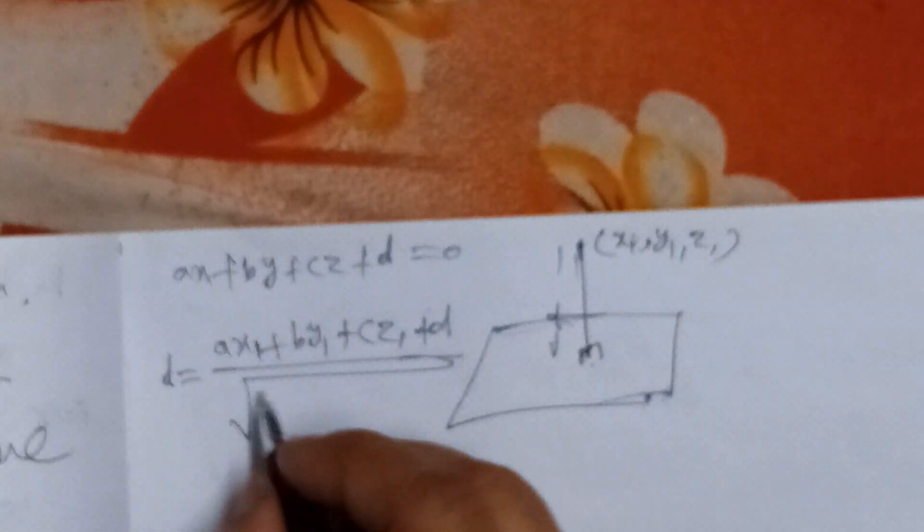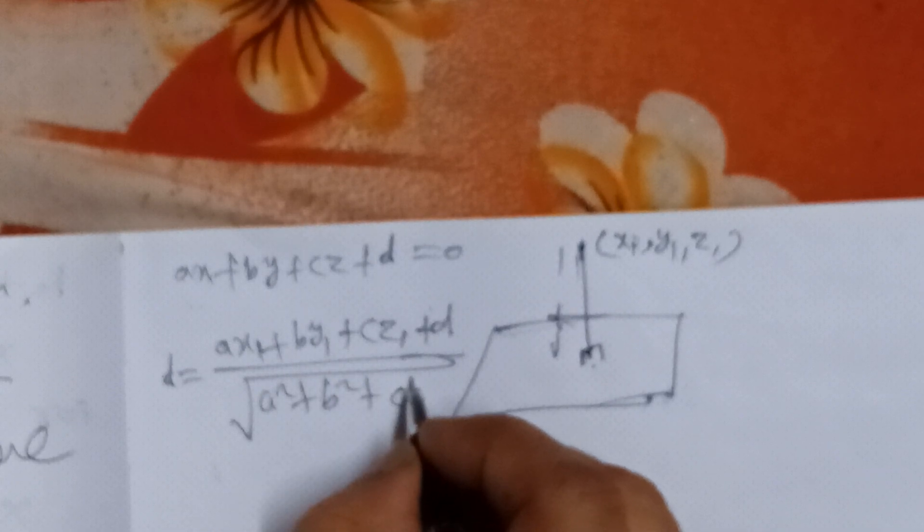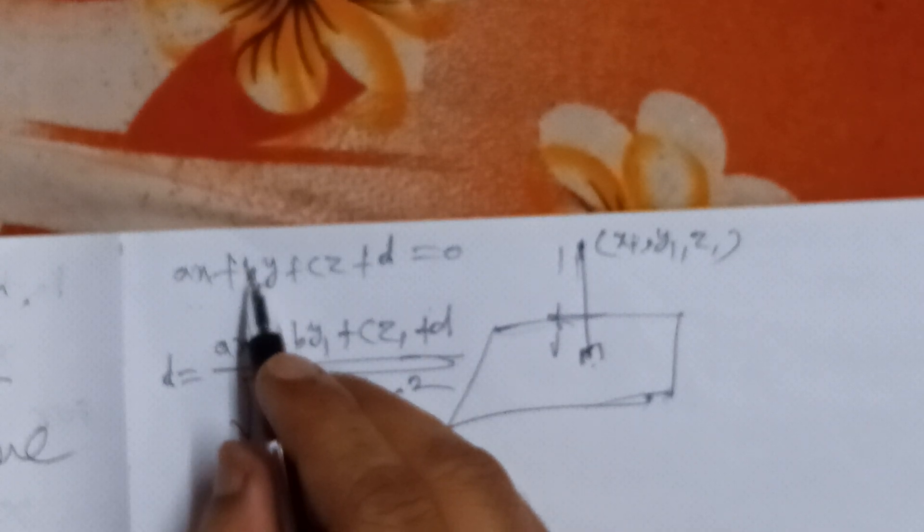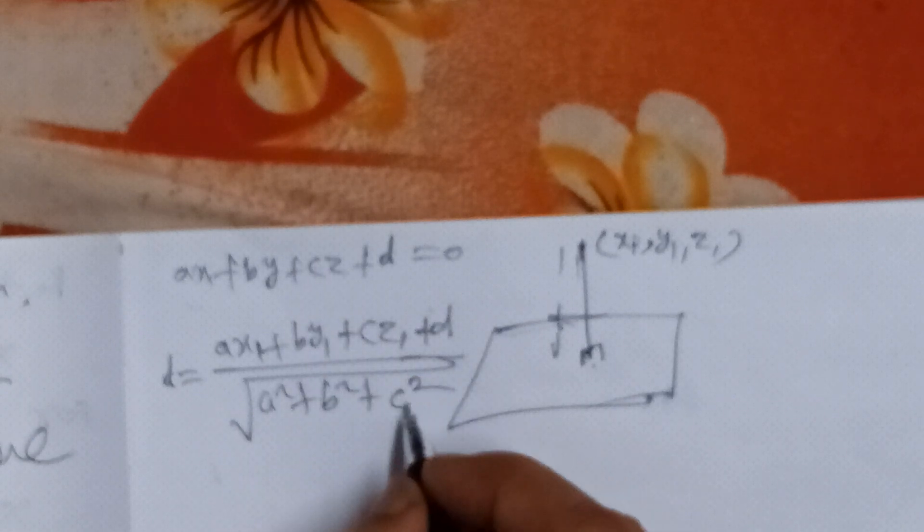We put the coordinates (x₁, y₁, z₁) into the formula divided by the square root of the coefficient of x squared plus y squared plus the coefficient of z, which is c squared.